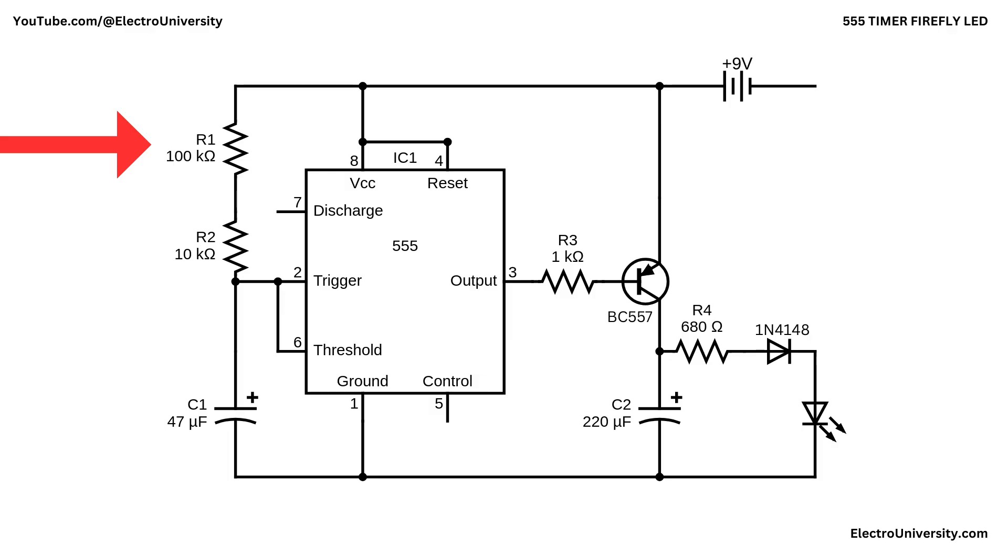With R1 much larger than R2, the output stays high for a relatively long time and low for a short time, giving long pauses and quick events, which matches a Firefly-like flash pattern. Pin 8 and pin 4 of the 555 are tied together to the 9-volt battery, powering the IC and holding reset inactive. The exact flash rate is set by the combination of R1, R2, and C1. Larger capacitance or resistances make slower flashes, smaller values make faster flashes.